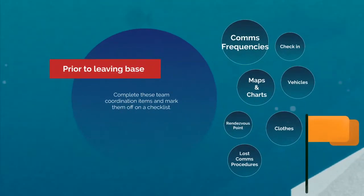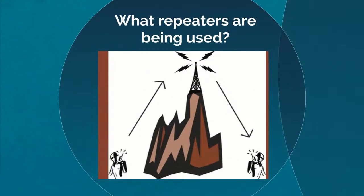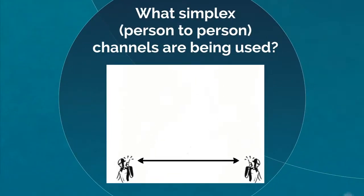Before you leave mission base, you'll need all of these details. Know your frequencies — it's mission critical. Repeaters are large antenna stations placed atop tall hills or mountains that take up your broadcast signal and rebroadcast it over a wider area, dramatically increasing your range for transmitting radio messages. Keep in mind there may be more than one repeater for your area of operation. Simplex channels, also known as tactical channels, are what you use to talk line of sight to a person — there are usually a few in use, so write them down.